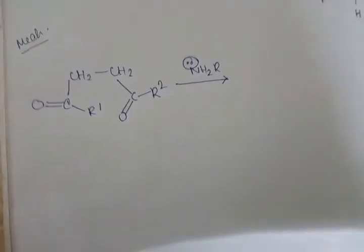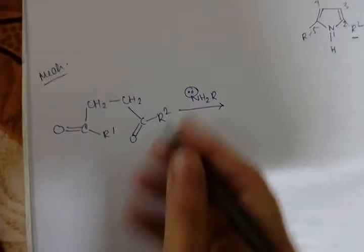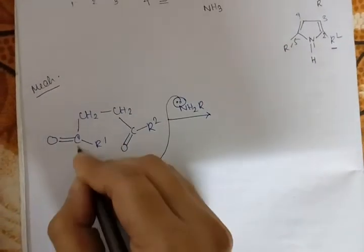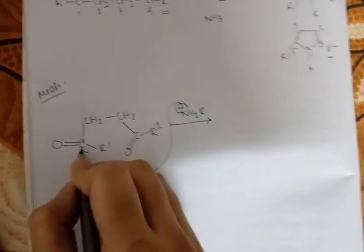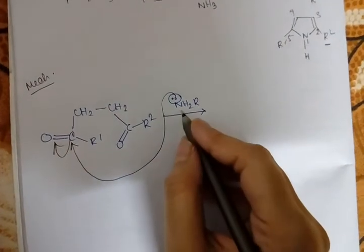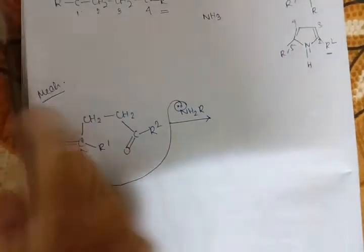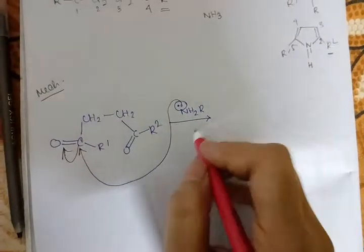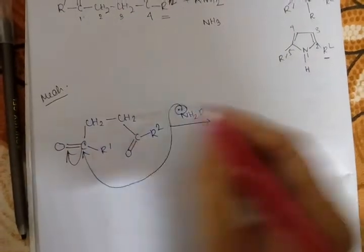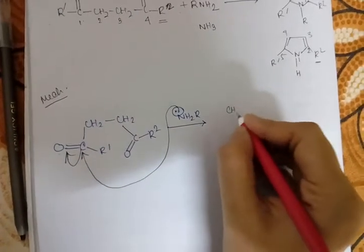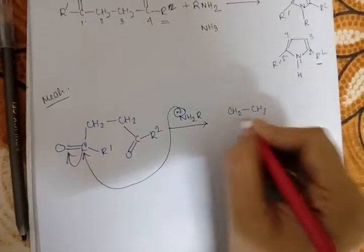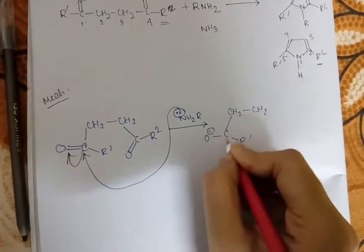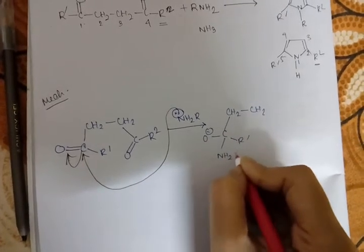The mechanism is very easy. At first, nitrogen will attack this carbonyl carbon and this bond will break. NH2 positive will form and it will release one H+. This H+ will be captured by this O minus and OH will form, giving the structure CH2-CO-R1-NH2-R.